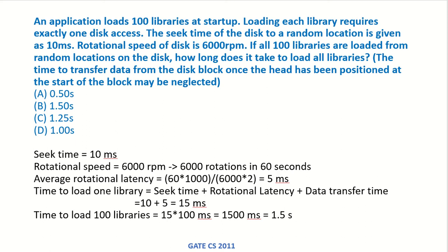An application loads 100 libraries at startup. Loading each library requires exactly one disk access, so 100 libraries require 100 disk accesses. The seek time to a random disk location is 10 milliseconds and the rotation speed is 6000 rotations per minute. All 100 libraries are loaded from random locations. The time to transfer data from the disk block once the head is positioned may be neglected.